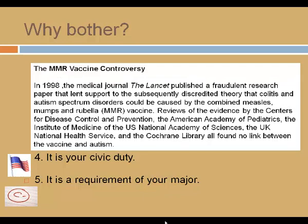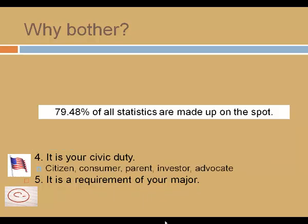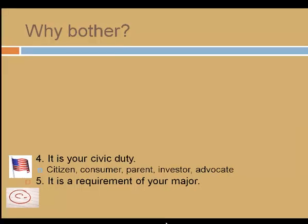In 1998, the medical journal The Lancet published a fraudulent research paper that lent support to the subsequently discredited theory that colitis and autism spectrum disorders could be caused by the combined measles, mumps, and rubella vaccine. Reviews of the evidence by the Centers for Disease Control and Prevention, the American Academy of Pediatrics, the Institute of Medicine of the U.S. National Academy of Sciences, the U.K. National Health Service, and the Cochrane Library all found no link between the vaccine and autism. And finally, you should know that 79.48% of all statistics are made up on the spot. A rudimentary understanding of statistics will allow you to thoughtfully consider and maybe question or challenge statistics that are reported as facts.